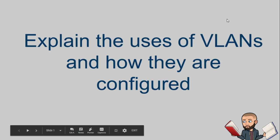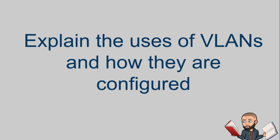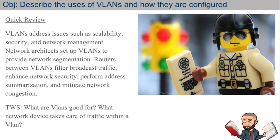Part two of my explanation on VLANs. This objective is going to specifically look for you to explain the uses of VLANs and how they are configured. Quick review from before: VLANs address issues such as scalability, security, and network management. Network architects set up VLANs to provide network segmentation. Routers between VLANs filter broadcast traffic, enhance network security, perform address summarization, and mitigate network congestion.